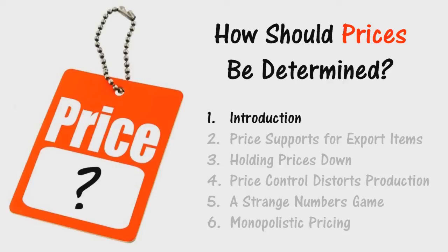All products are in competition for the consumer's dollar, and a change in any one price will affect an indefinite number of other prices. No single price therefore can be considered an isolated object in itself — it is interrelated with all other prices. It is precisely through these interrelationships that society is able to solve the immensely difficult and always changing problem of how to allocate production among thousands of different commodities and services.